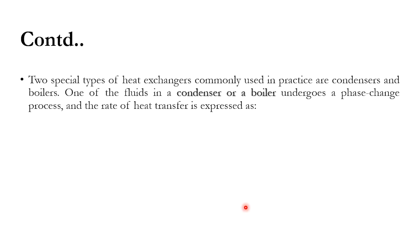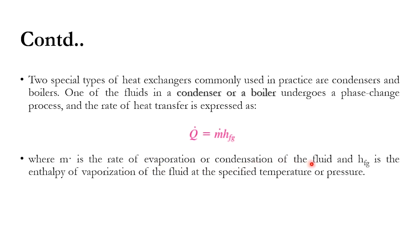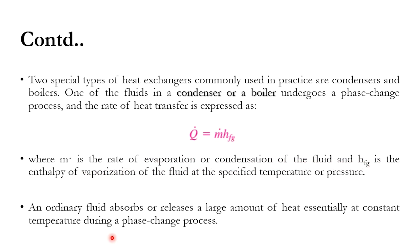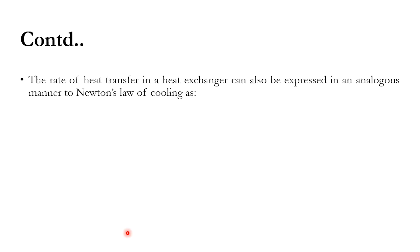Two special types of heat exchangers commonly used in practice are condensers and boilers, where phase changes are involved. In condensers, fluid is converted from vapor to liquid; in boilers, it converts from liquid to vapor. For phase change systems, Q = ṁ · h_fg, where ṁ is the rate of vaporization or condensation and h_fg is the enthalpy of vaporization at the specified temperature or pressure. During phase change there is no temperature change — only latent heat is exchanged at constant temperature.